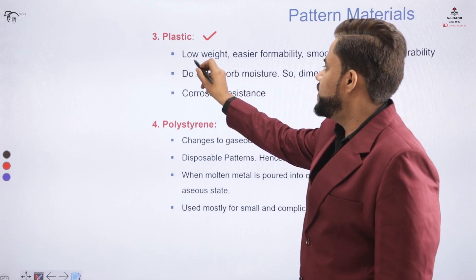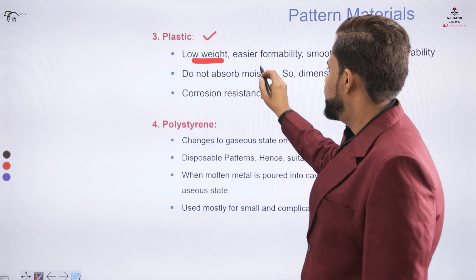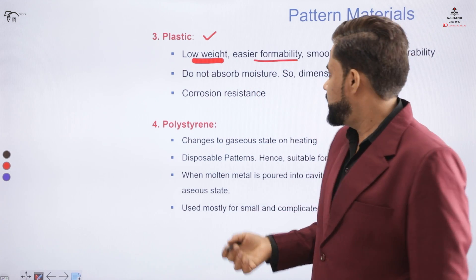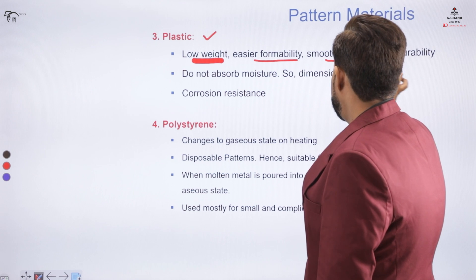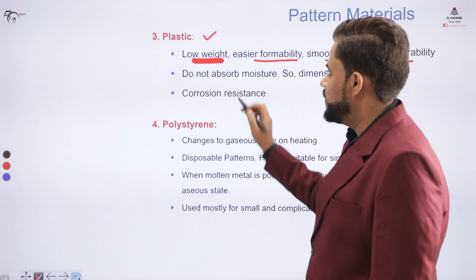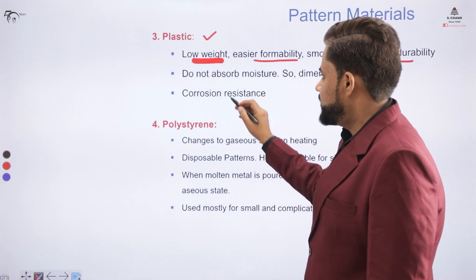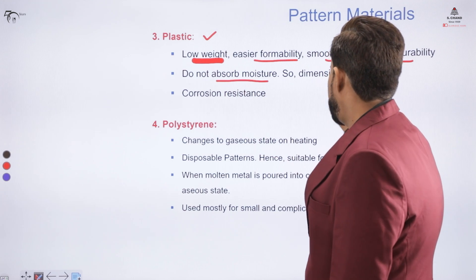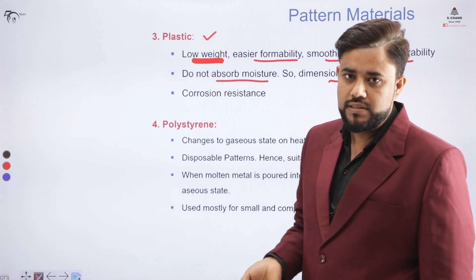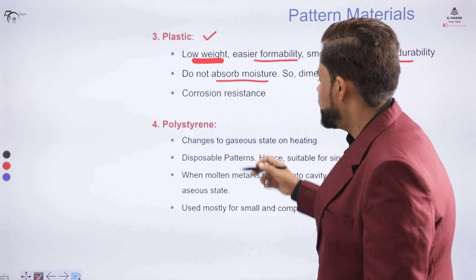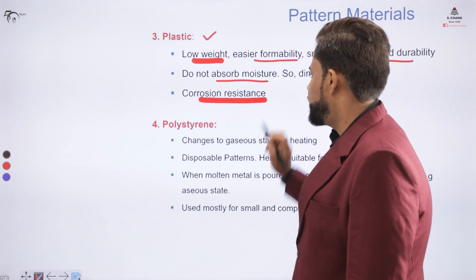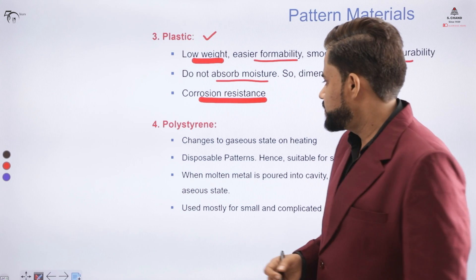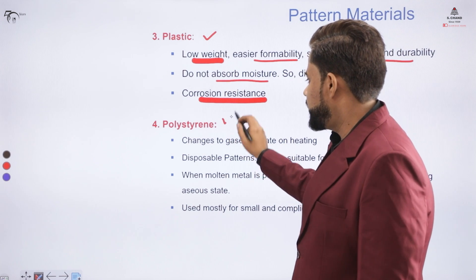Plastic is used as a pattern material because of its low weight, formability (it can be formed easily), smooth surfaces, and durability. Plastics do not absorb moisture, so dimensional stability is maintained. Plastics also have corrosion resistance compared to metals.